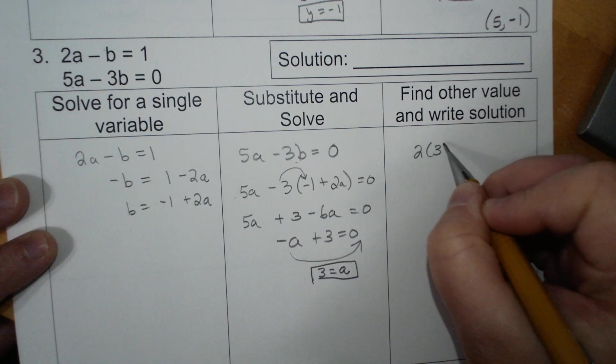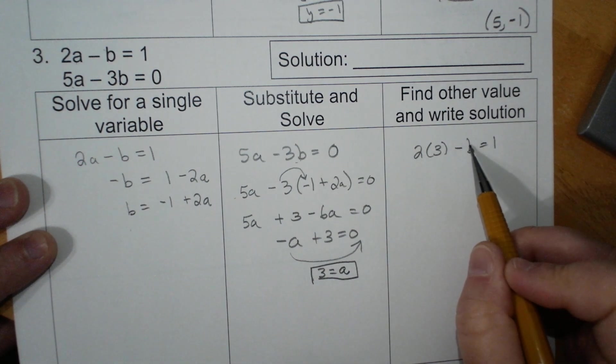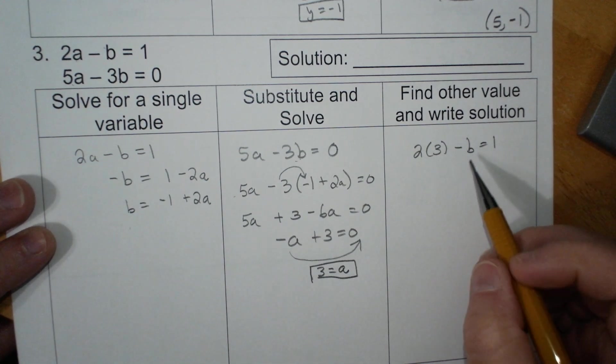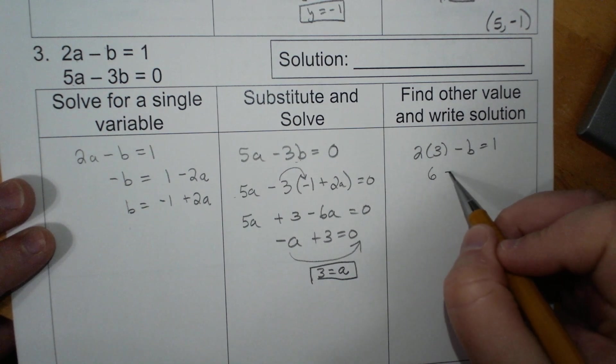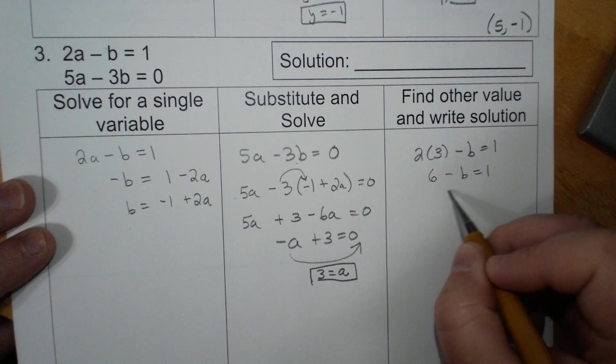Minus 3, minus 3, minus B equals 1. I don't like the variable B because my sloppy writing makes it look like a 6 every once in a while. 6 minus B equals 1. 6 minus what gives me 1?